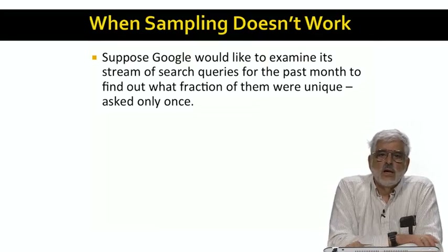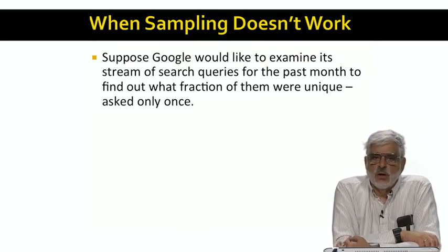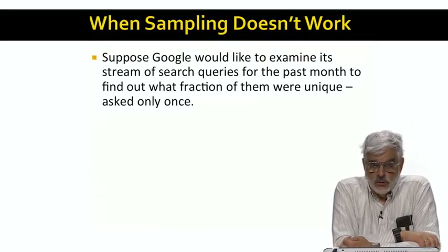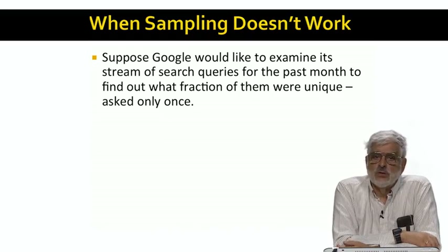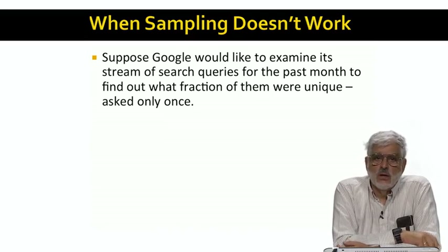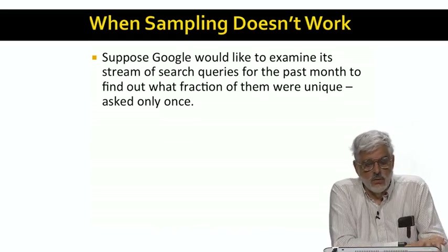Let's take up an example. Google has a stream of search queries coming in at all times. We might want to know what fraction of search queries received over a period such as a month are unique — that is, there's only one occurrence of that search query in the entire month.